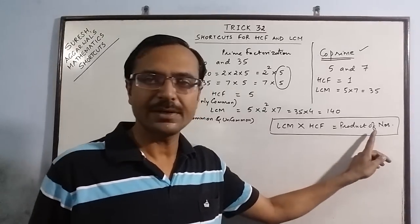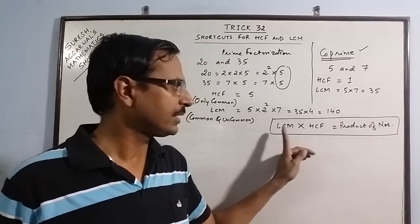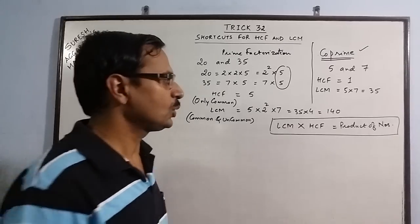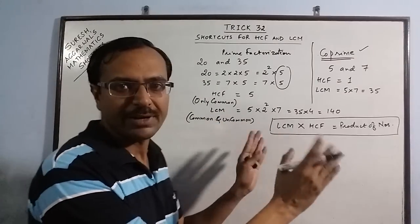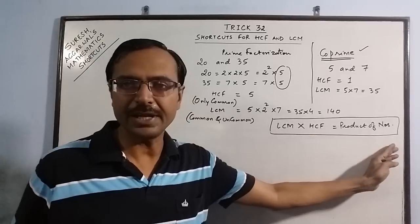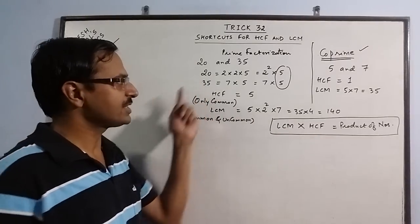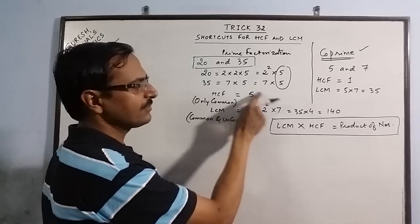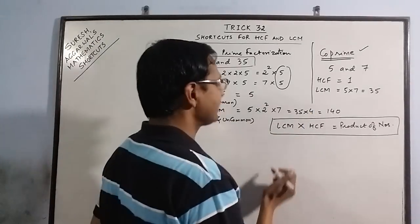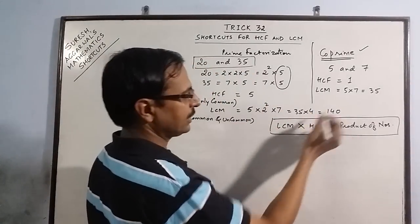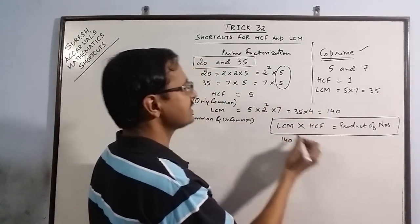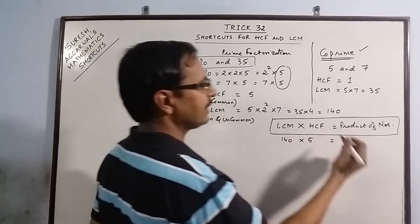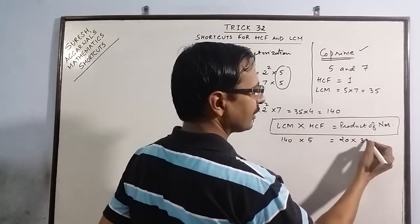There are 4 terms here: 2 numbers, their HCF and their LCM. 4 things involved. So let me just verify this identity for the problem which I have just done. So the numbers were 20 and 35 and their LCM and HCF we just found. So let us check this. LCM was 140, HCF was 5 and the numbers were 20 and 35. So I will take the product of numbers here.